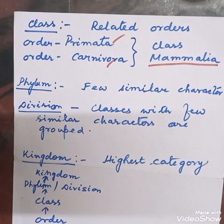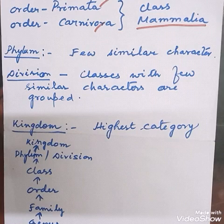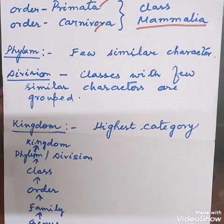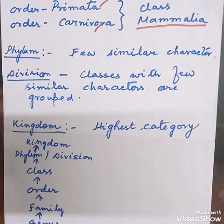The highest category is the kingdom. All animals belong to their phyla and are assigned to the highest category — kingdom Animalia. All plants from the various divisions belong to kingdom Plantae. So the two kingdoms are Plantae and Animalia.